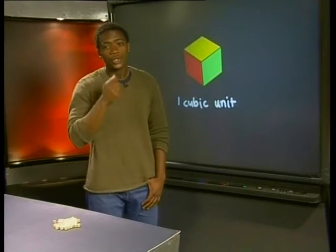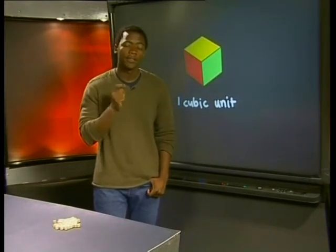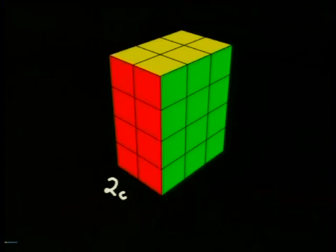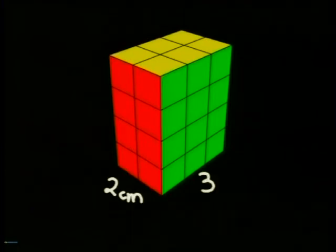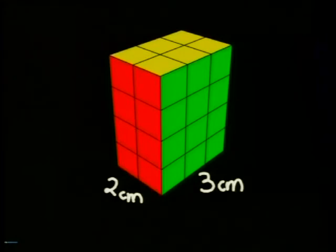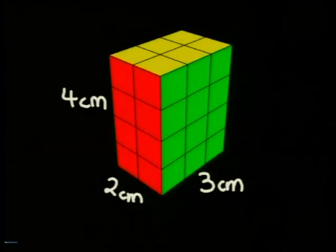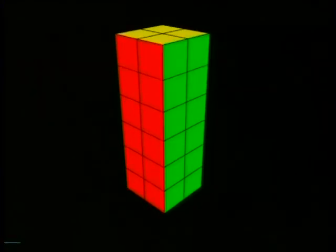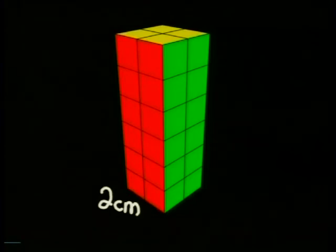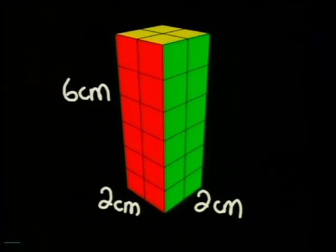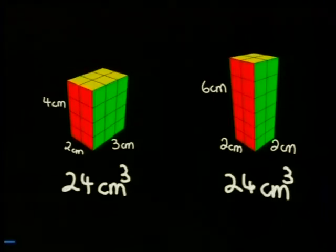Now think about this. Do you think we could get two boxes with different shapes that have the same volume? That should be possible. This box of 2 centimeters multiplied by 3 centimeters multiplied by 4 centimeters has a volume of 24 cubic centimeters. But you could have another box which is 2 centimeters by 2 centimeters by 6 centimeters — it would have a different shape but the same volume of 24 cubic centimeters.